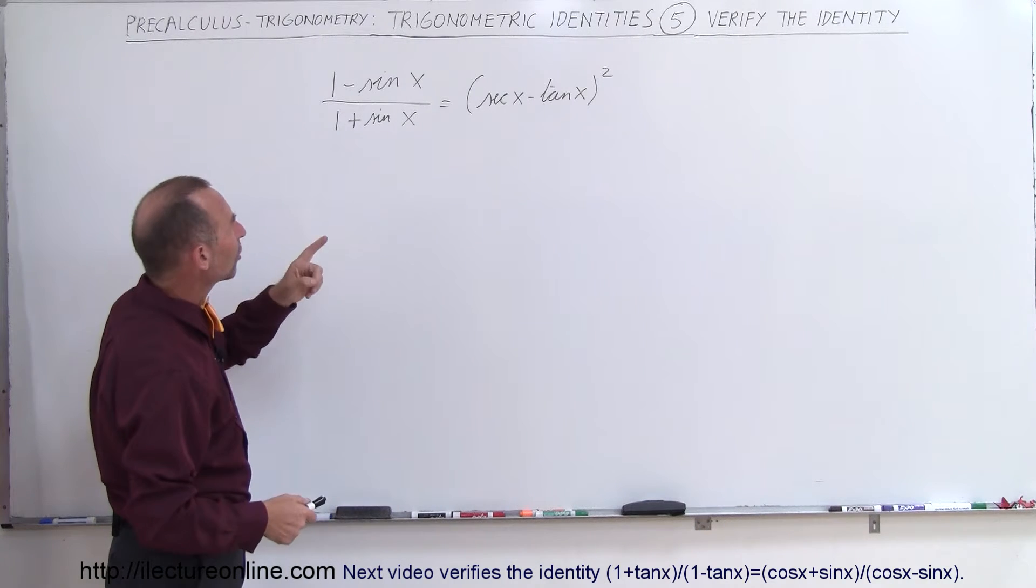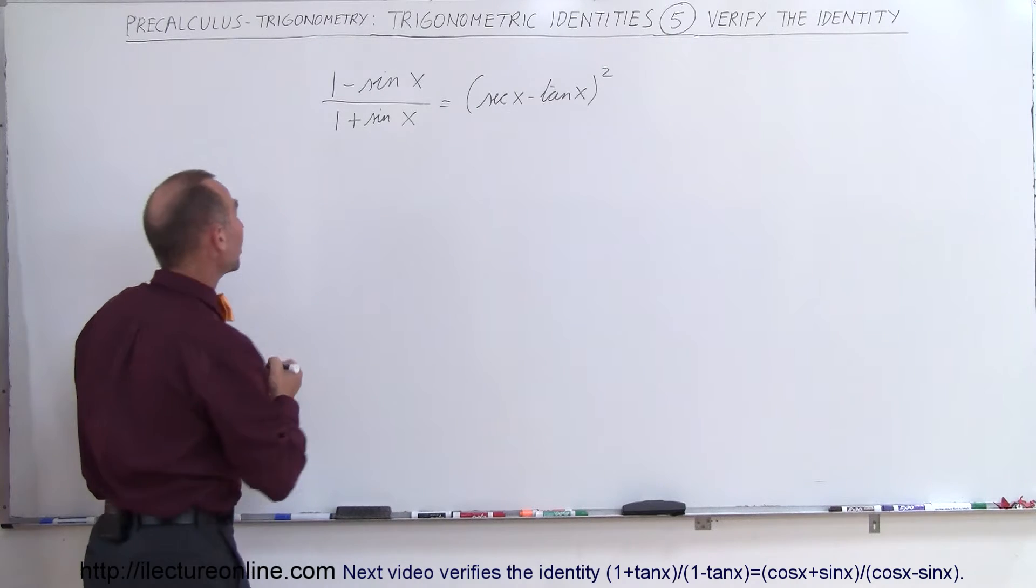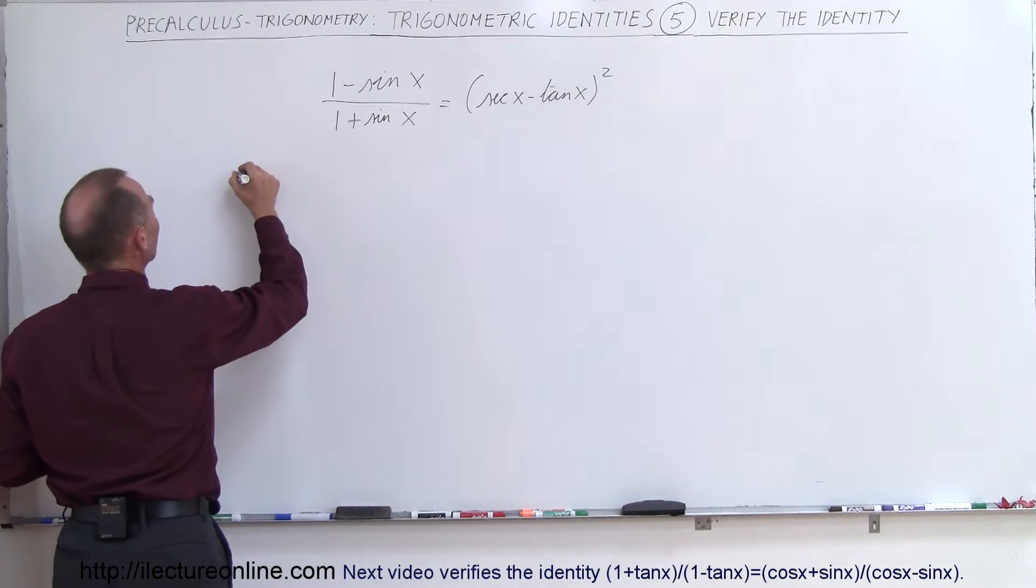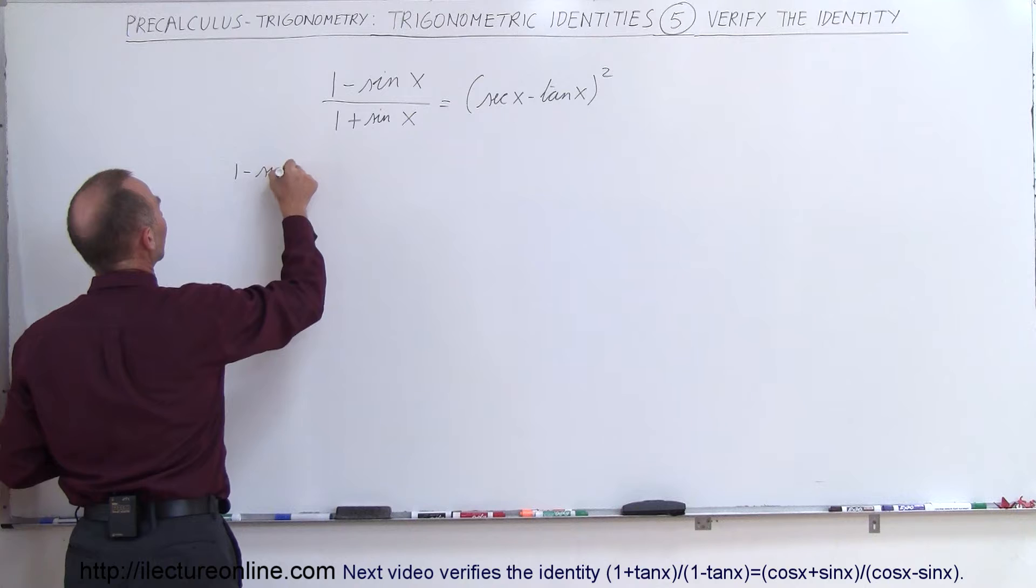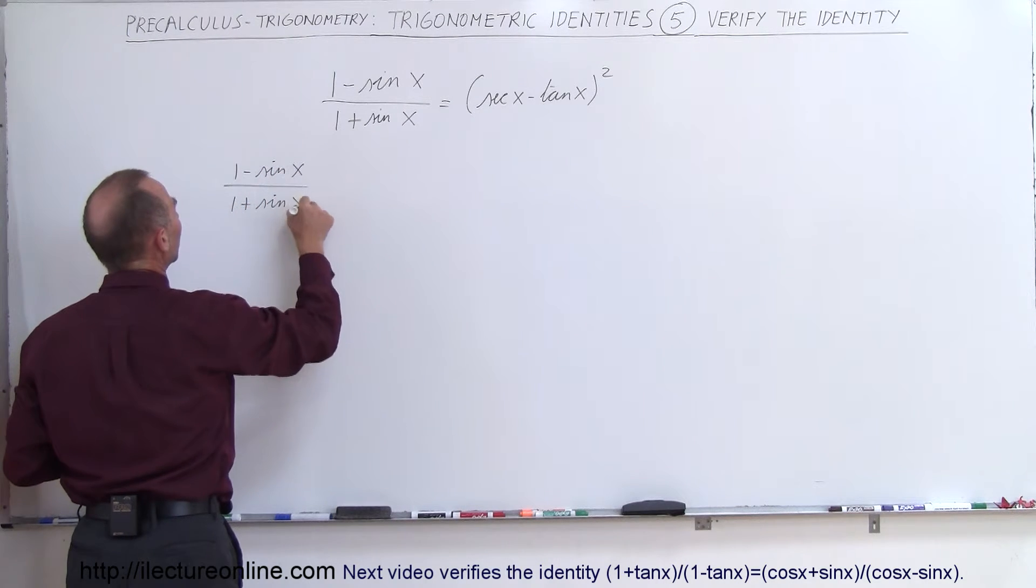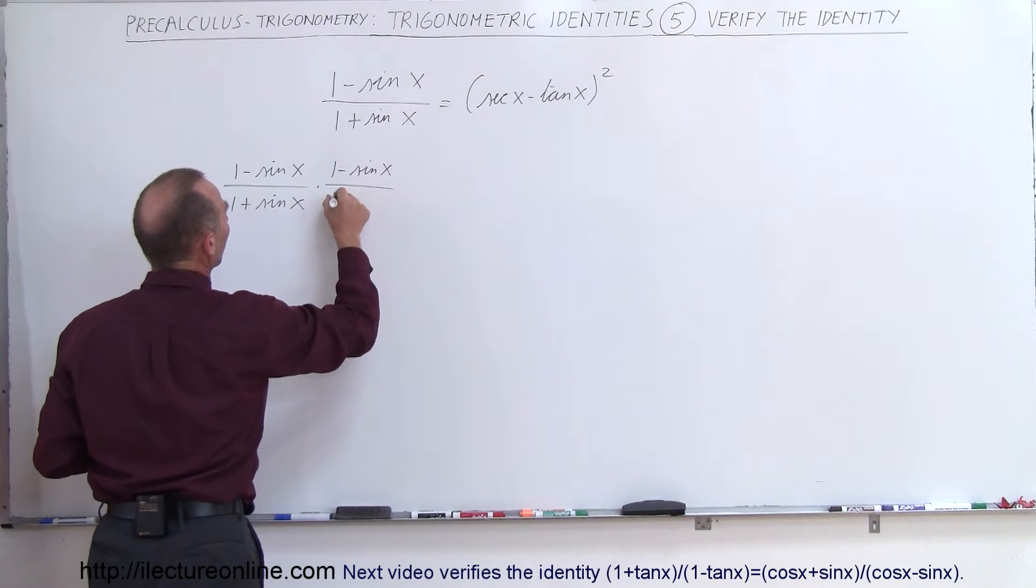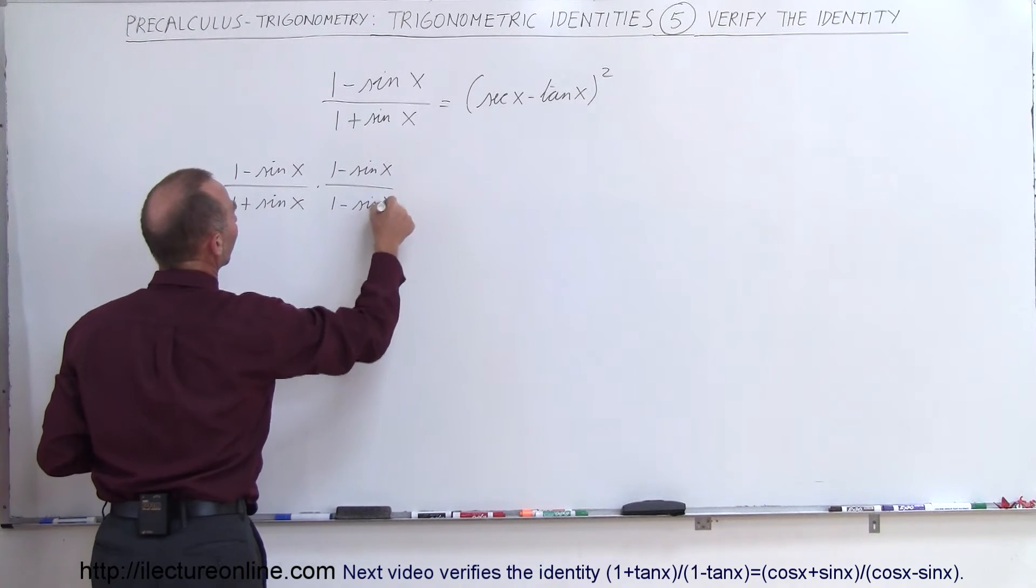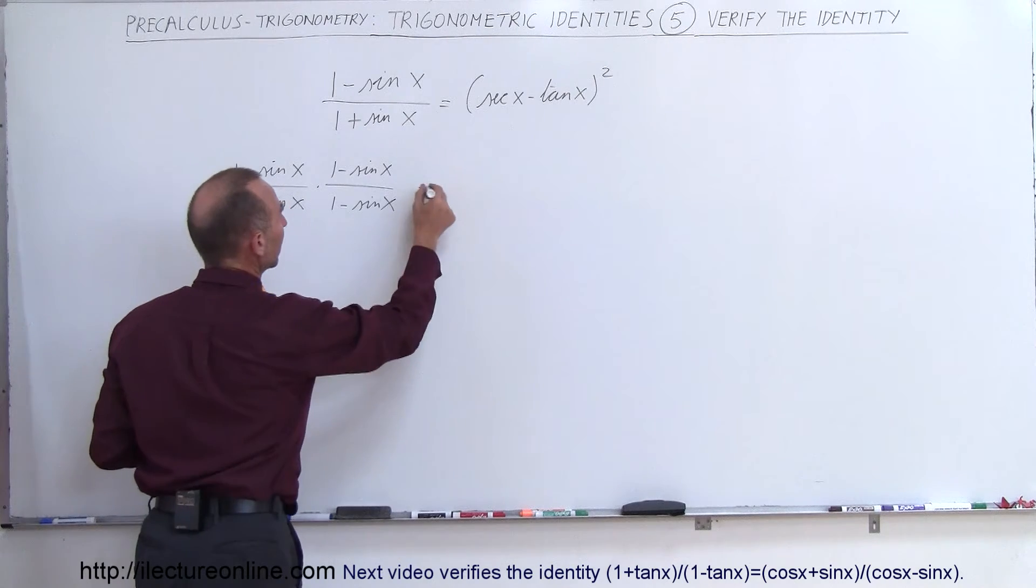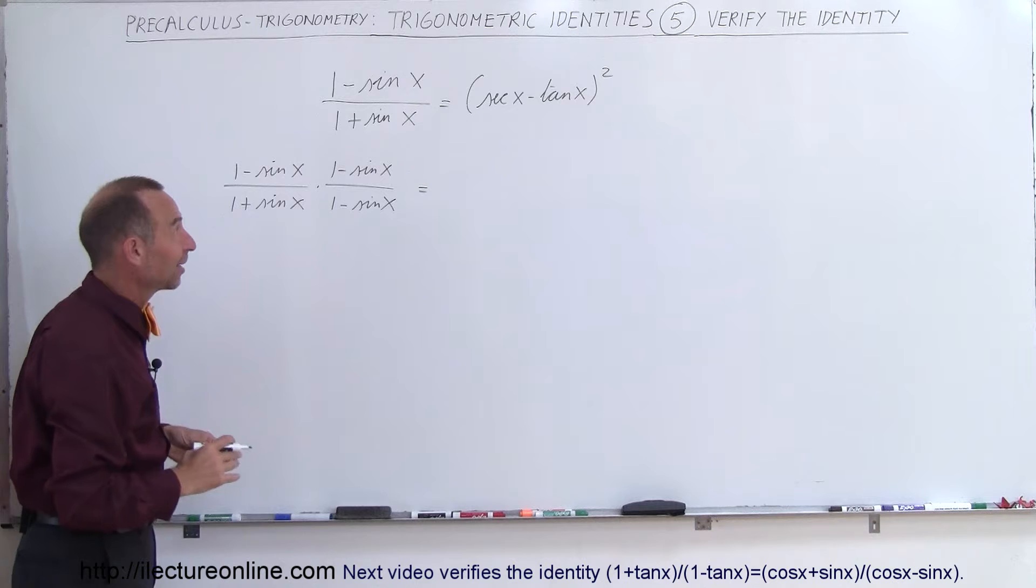And what I'm going to do here is multiply the top and the bottom by the conjugate of the denominator. That may be a good thing to do, and let's see what happens when we do that. So we have 1 minus the sine of x divided by 1 plus the sine of x, and we'll multiply that times 1 minus the sine of x divided by 1 minus the sine of x. So we assume that that will eventually look like that, even though it doesn't look like that at all right now.